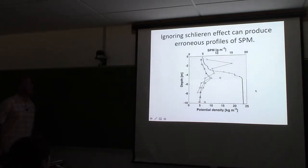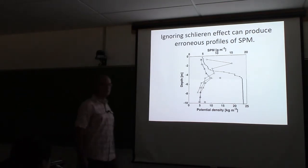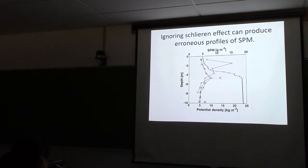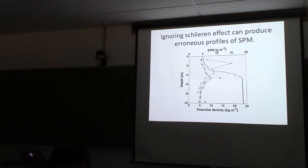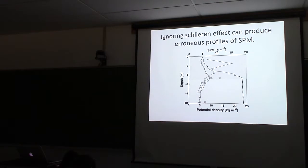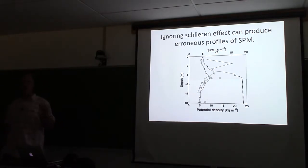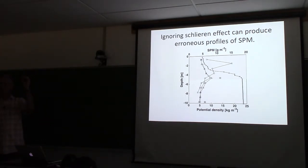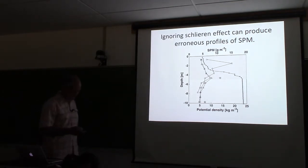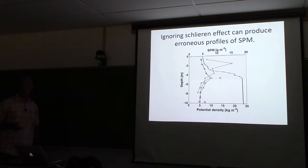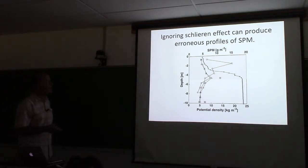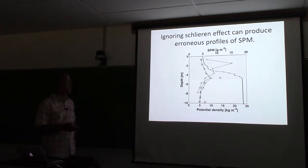If you ignore the Schlieren effect - which would be easy to do since the LISST is a robust, widely applied instrument - you could calibrate your LISST in the absence of any Schlieren and get a nice linear relationship between LISST attenuation and suspended particulate matter. But then if you put it into a pycnocline with strong stratification, you might get really high attenuation readings that you would incorrectly interpret as a particle-rich layer. There are definitely examples of this in the literature, because people often won't measure SPM at the same time as running the LISST.